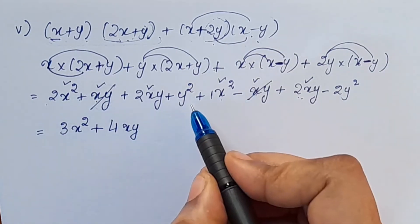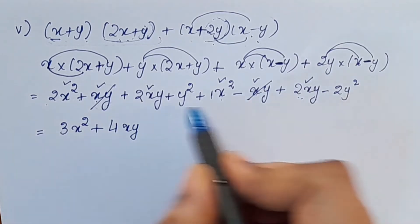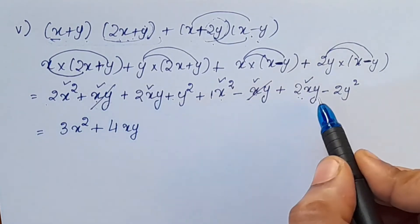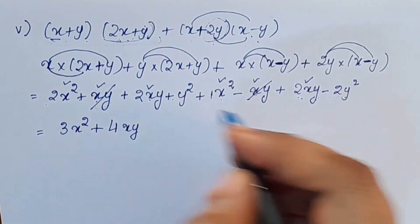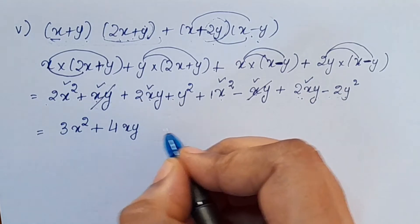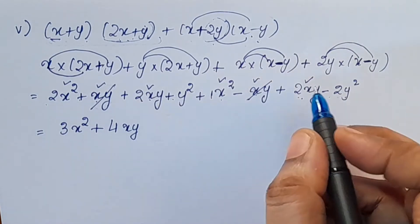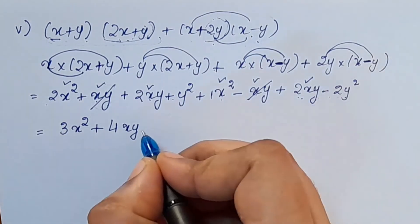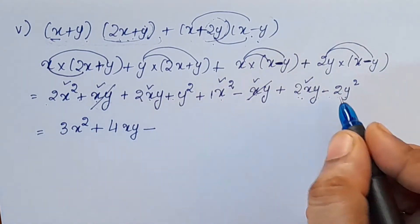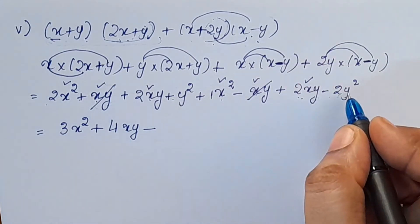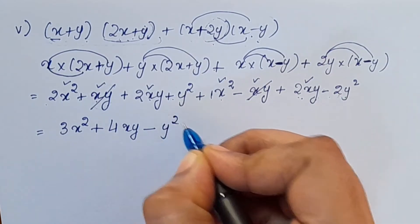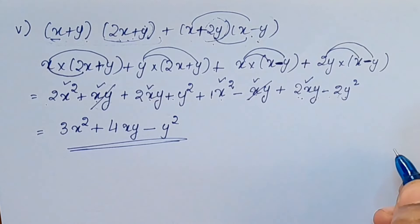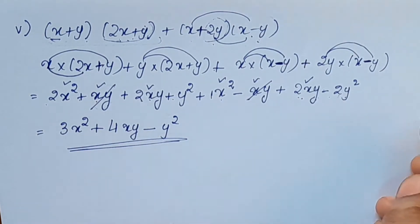This is y². y² minus 2y²: 1 plus and 1 minus — big sign is negative, 2 minus 1 is 1, so 1y². The answer is 3x² + 4xy - y².